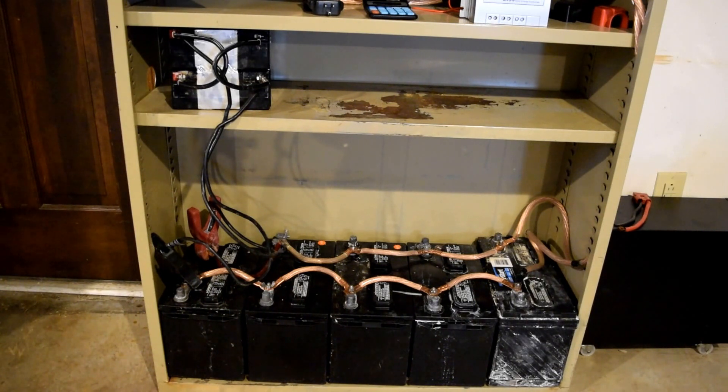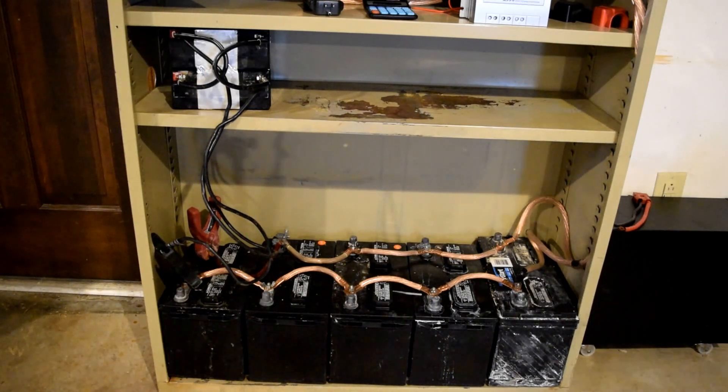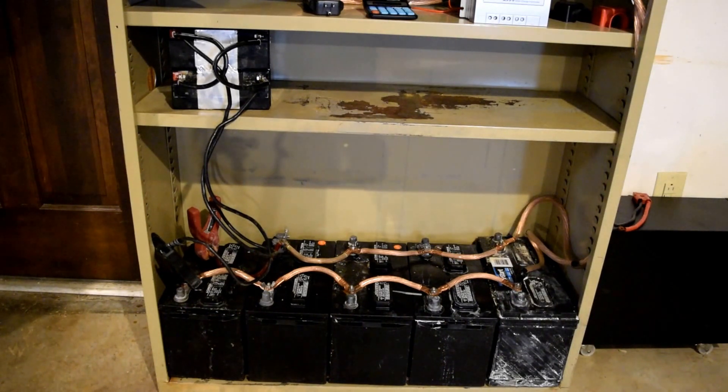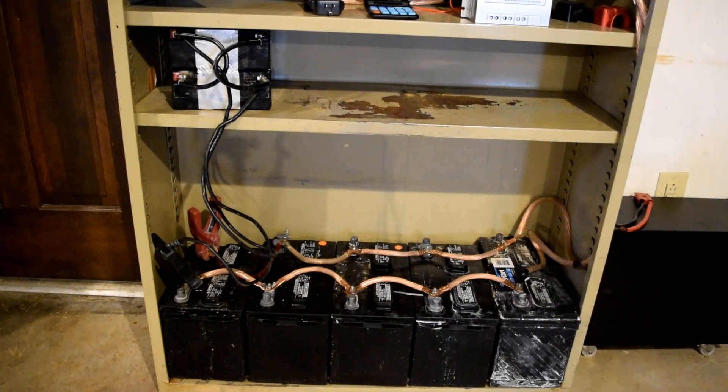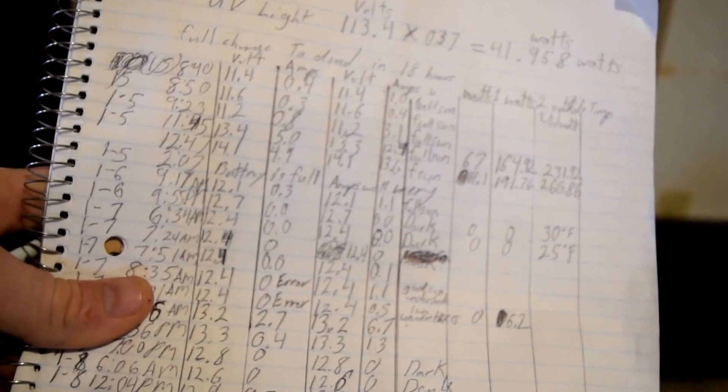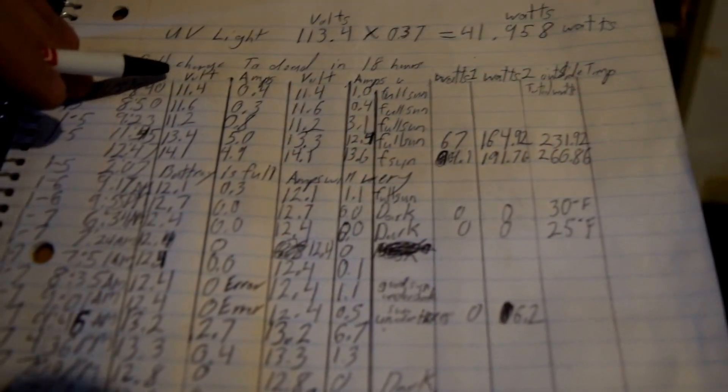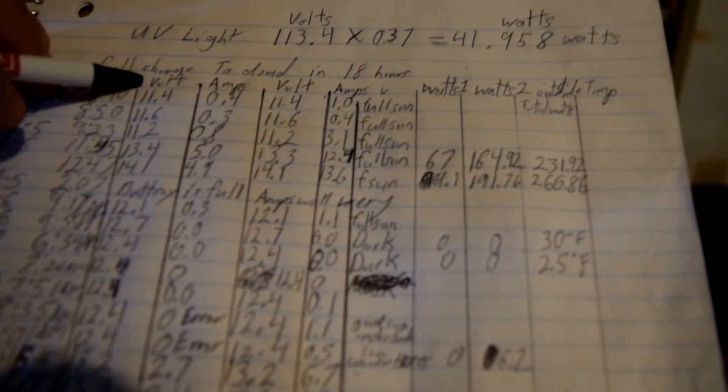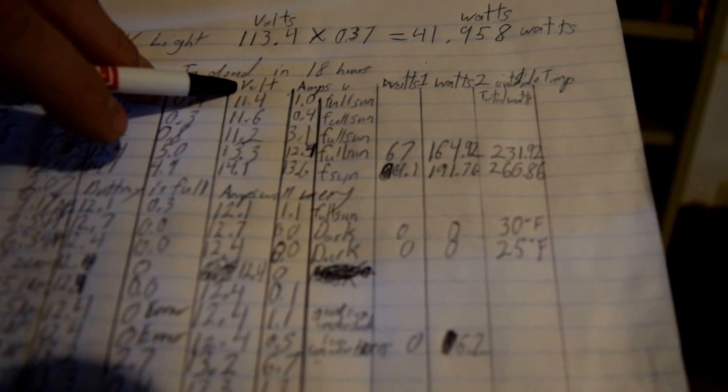Once I get that system put together I'm going to be really happy with it. But for right now I'm going to show you what I've been doing so far. I've been writing down a data sheet. I've got two different solar systems that's charging the same bank. The left one here is the Harbor Freight one, the right one is the Ames corporation one.